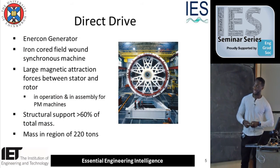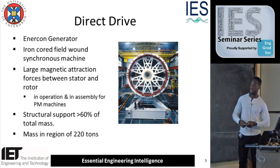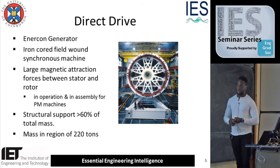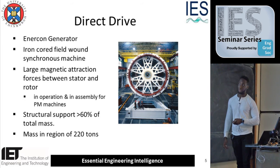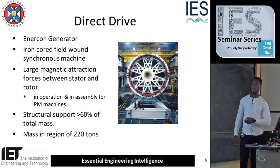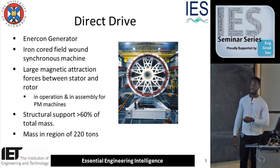This is a clear example of a generator produced by Enercon. One of the important things here is that the structural support accounts for 60% of the total mass of the actual generator, and the mass is in the range of 220 tons, which is quite heavy. Having to deal with something of this weight becomes a problem during transportation and also during managing the forces that will occur in this sort of machine.